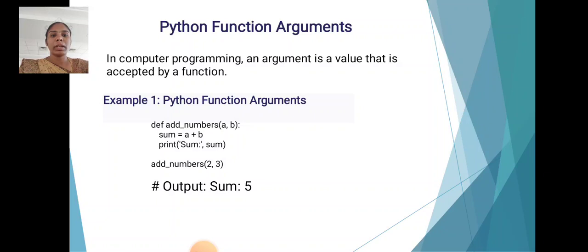Python function arguments. In computer programming, an argument is a value that is accepted by a function. For example: def add_numbers(a, b): sum = a + b; print('Sum:', sum). add_numbers(2, 3). The output is Sum: 5.